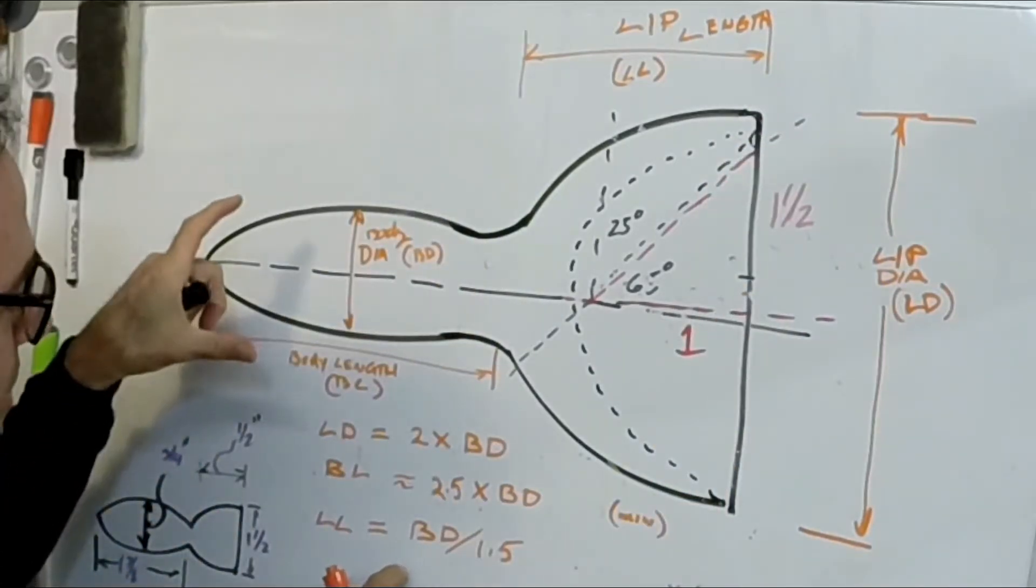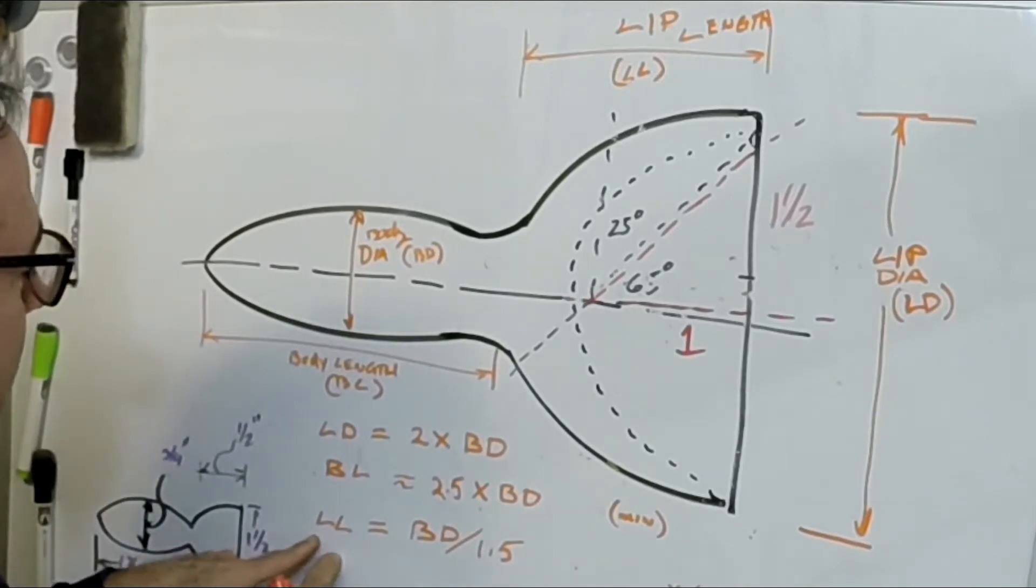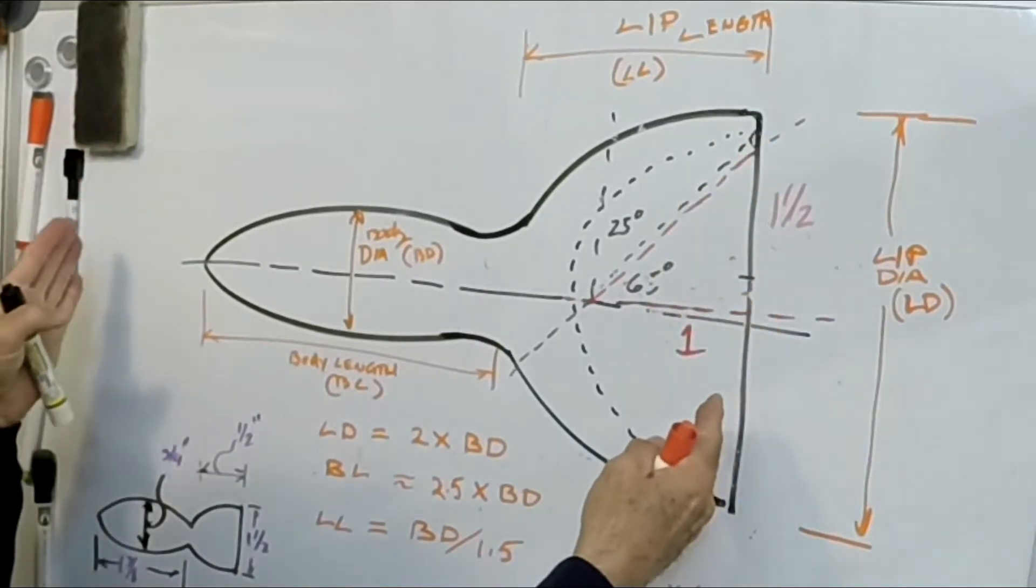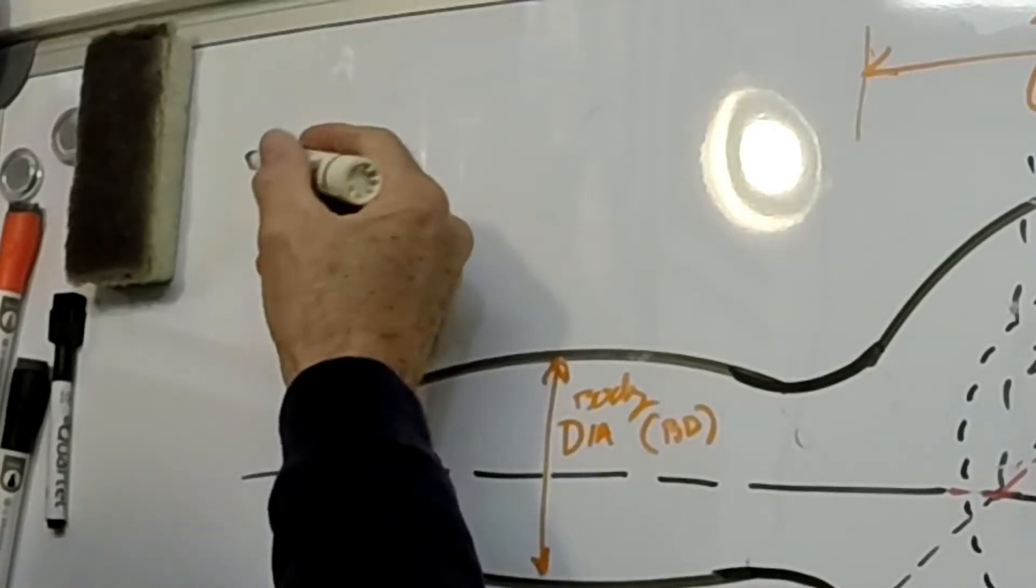You take the body diameter and you divide it by 1.5. Once you solve for the lip length, you just add body length and the lip length, and that'll give you how big of a piece of wood you need in your lathe.